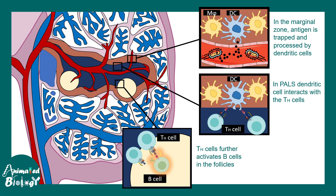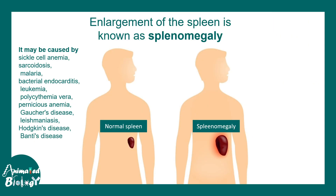The spleen is kind of equivalent to the lymph node but a much bigger version. Enlargement of the spleen is known as splenomegaly, which is caused by many disease-associated situations like sickle cell anemia, sarcoidosis, malaria, bacterial endocarditis, leukemia, and many more.